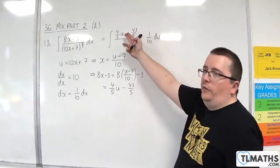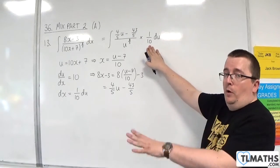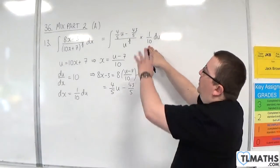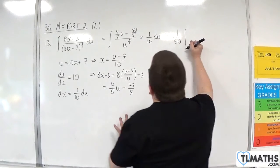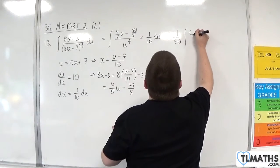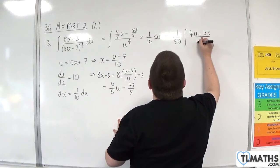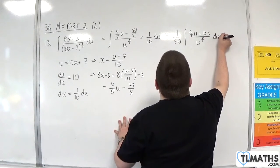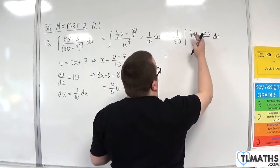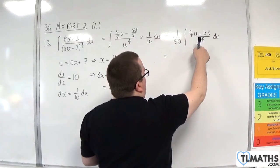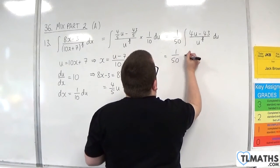Now we've got 1 fifths as a factor in the numerator, and we've got 1 tenths, so we'll have 1 over 50 out the front, and we'll have the integral of 4u take away 43 over u to the 8 thirds du. I now need to simplify this fraction by just dividing 4u by u to the 8 thirds, and the minus 43 by u to the 8 thirds. So I'm going to split it up.